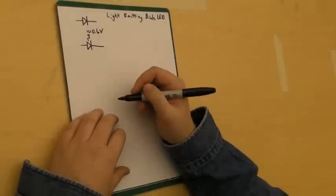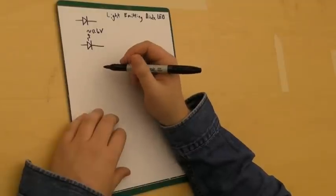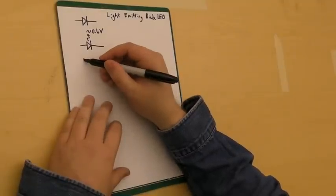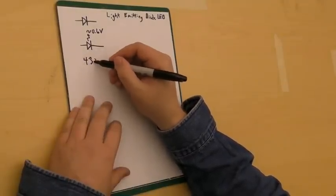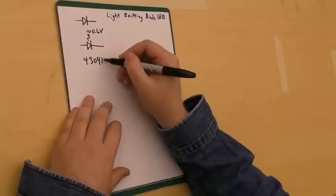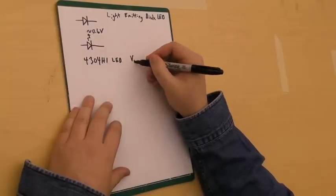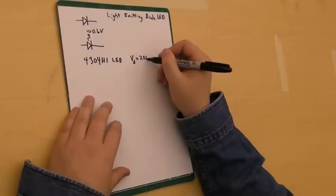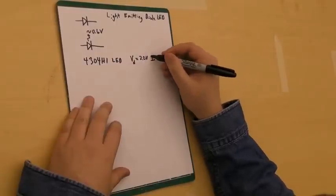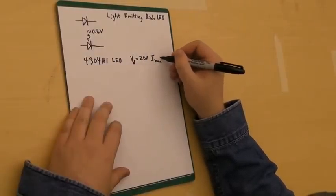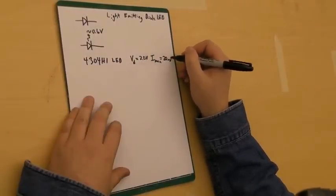When you buy an LED, it gives a certain voltage drop. So the LEDs that we commonly use in class is a 4304H1 LED. And it has a voltage drop of 2.0 volts. And it's got a maximum current of 20 milliamps according to the spec sheet.